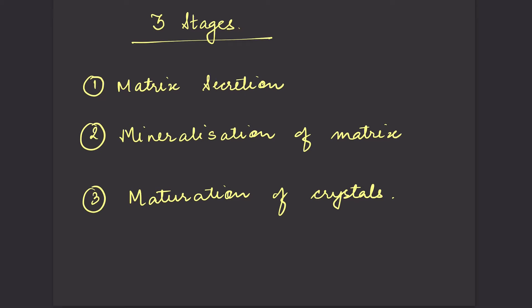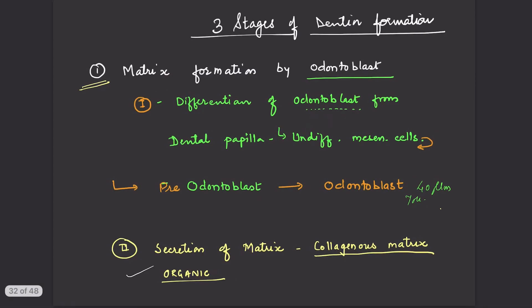There are three stages of dentine development. Some books give two phases, but a third phase — maturation of crystals — should be added. So the three phases are: first, matrix secretion; second, mineralization of matrix; and third, maturation of the hydroxyapatite crystals. Let us see the first stage: matrix formation by odontoblasts.